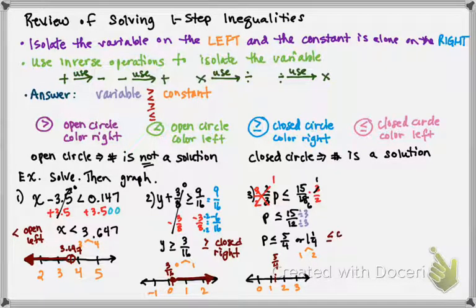Now, my inequality is less than or equal to, so it's going to be closed. That says that five-fourths, or one and one-fourth, is an answer, and I'm going to color to the left. So there we go.